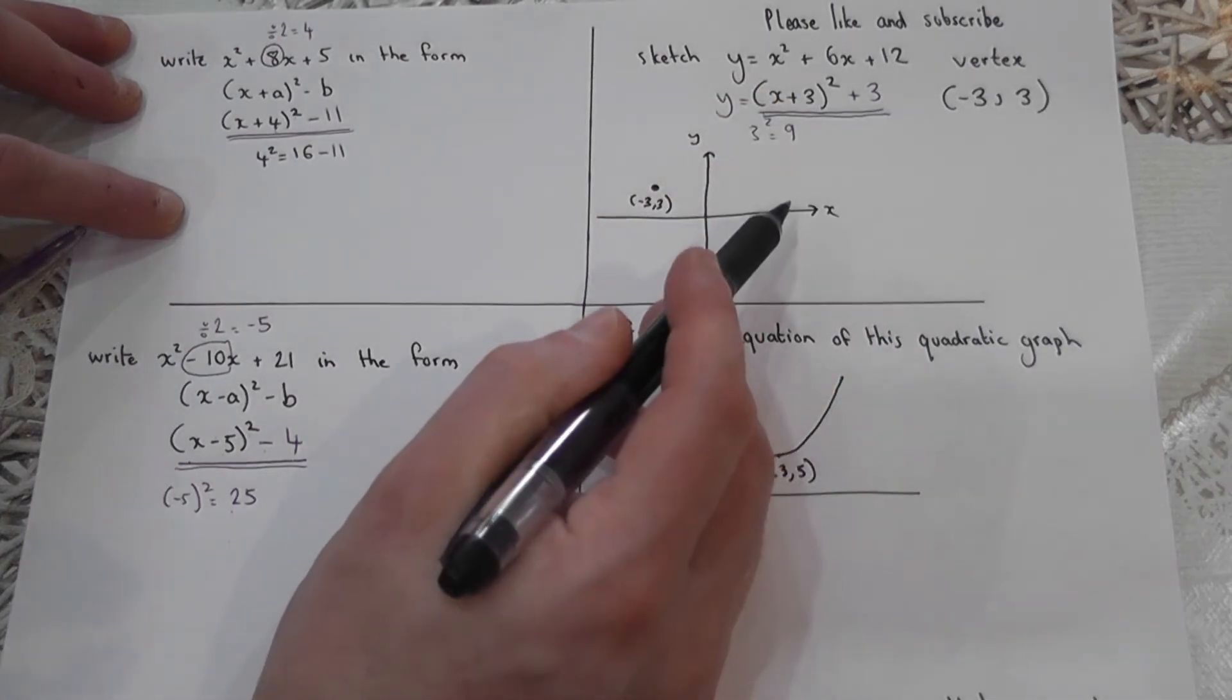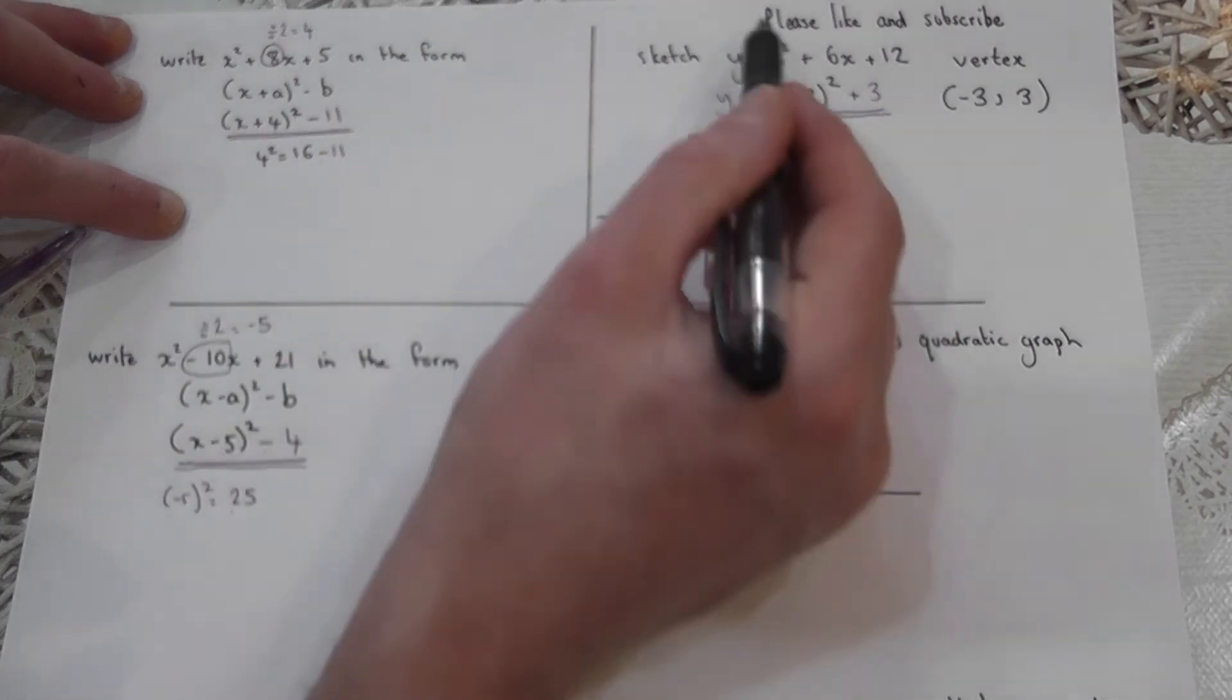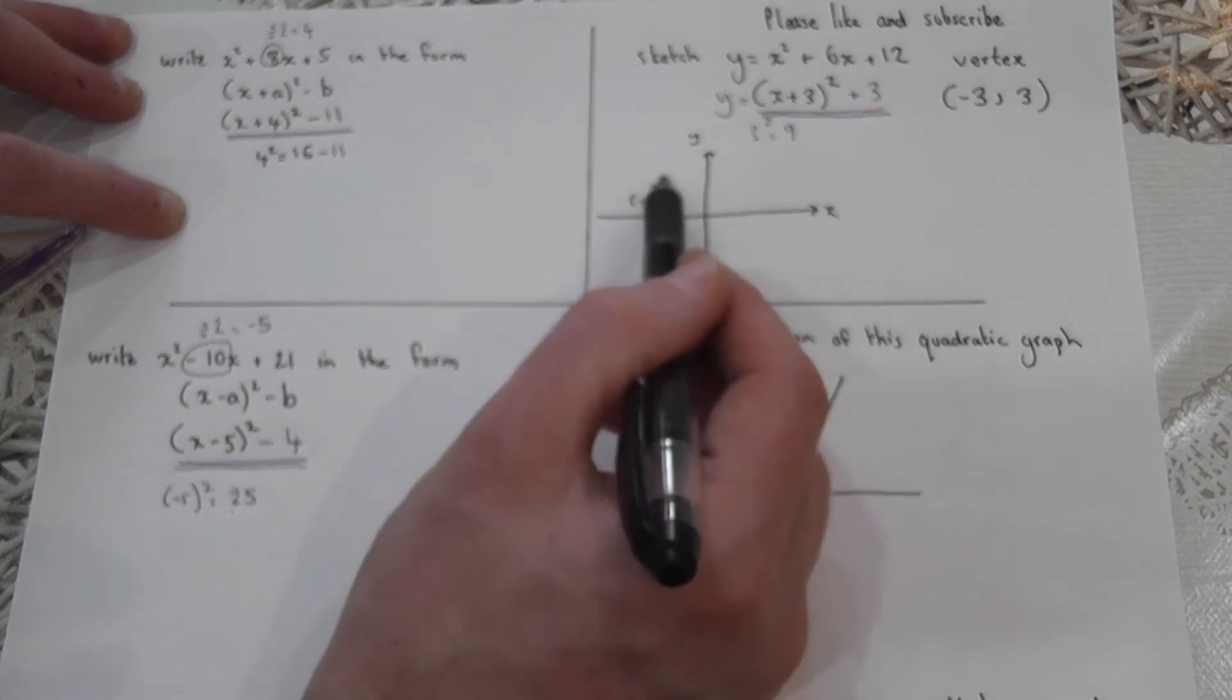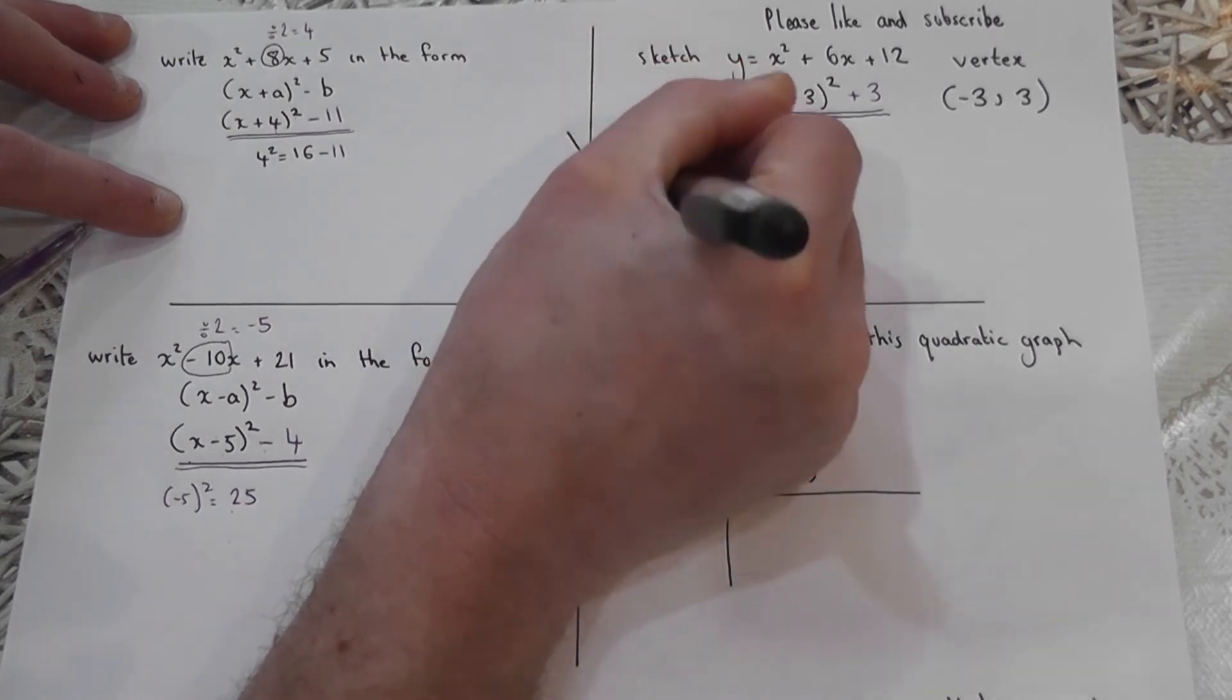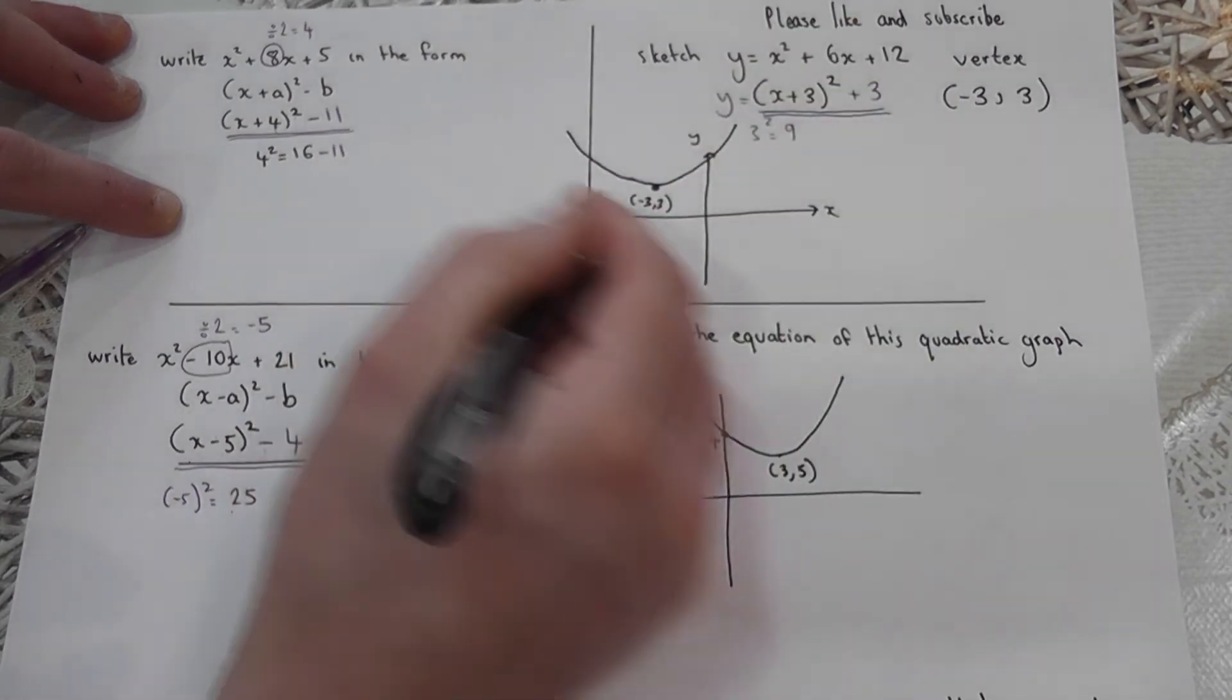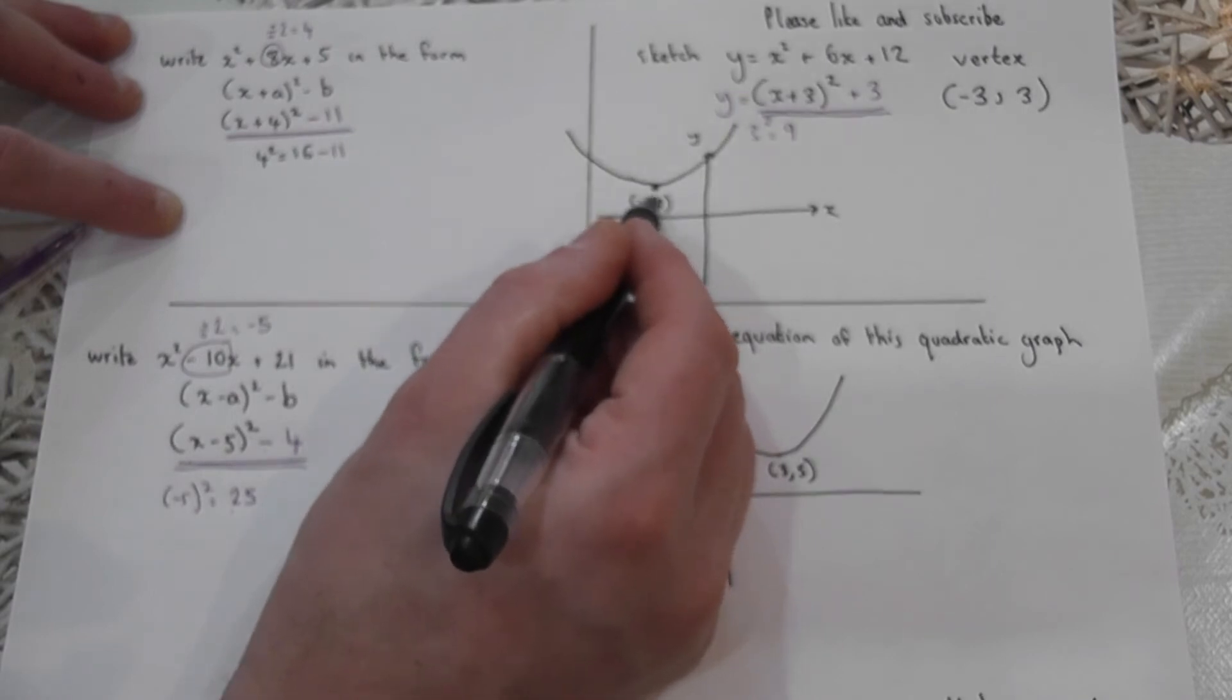Now the vertex is the bottom of the graph. An x squared graph is always a smiley face. It's a positive x squared. So I draw an x squared smiley face, where the vertex or bottom of the graph is that coordinate. And all I do is I just draw a smiley face which passes through that coordinate, and then goes back up again. And there is the x squared parabola, which passes through the coordinate minus three, three. That's the vertex.